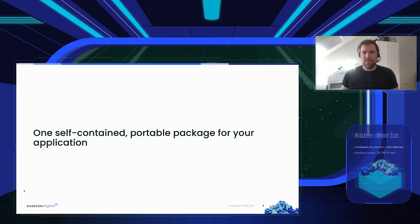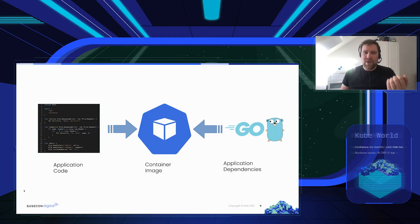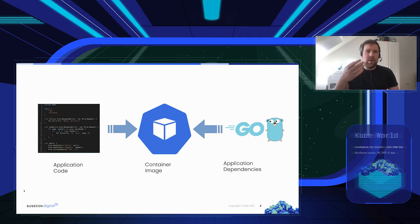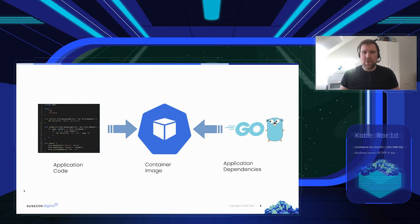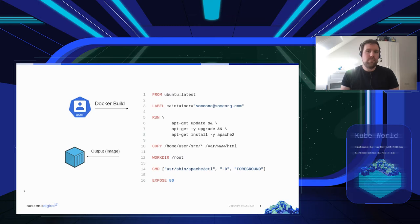You can package your application source code — whether it's interpreted files or compiled binaries — into a container image together with all the dependencies your application needs. That can be the language runtime, a web server, an application server, CLI tools, libraries, and packages. To build such an image you define how the container image should look using a so-called Dockerfile.